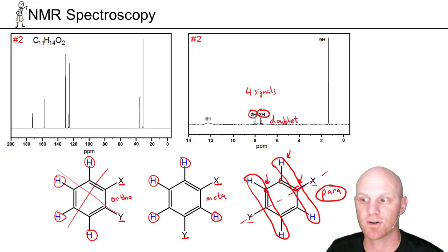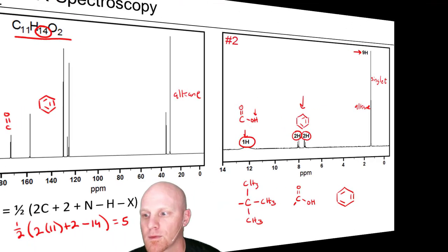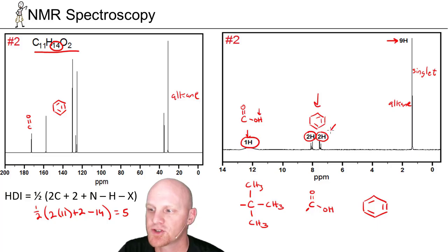So let's go back and put this together with the rest of our spectrum and come up with the entire structure. So now we've seen that these two 2H doublets showing up in the aromatic region indicate that we've got a para-substituted benzene ring, or para-disubstituted.